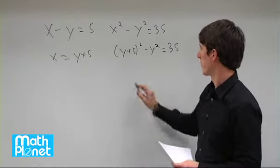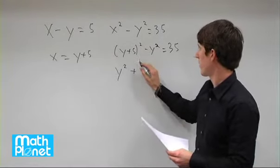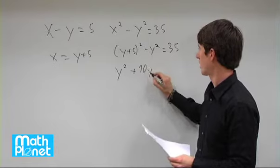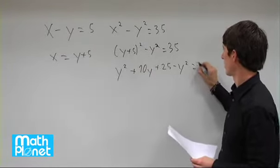Let's expand this out and simplify. We have y squared plus 5 times y times 2 is 10y. 5 times 5 is 25 minus y squared equals 35.